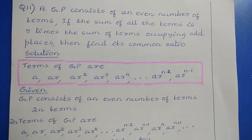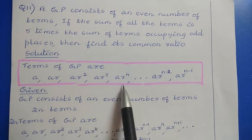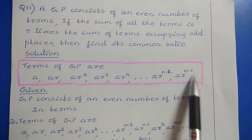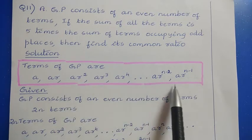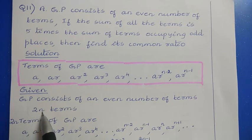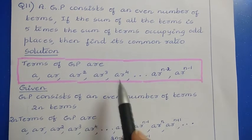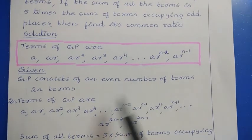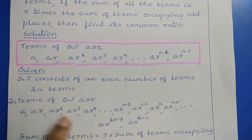Question number 11. A GP consists of an even number of terms. If the sum of all the terms is 5 times the sum of terms occupying odd places, find its common ratio. We take 2N terms of GP: A, AR, AR squared, AR cubed, AR to the power 4, up to AR to the power (2N minus 1). Even numbers are always represented as 2N.